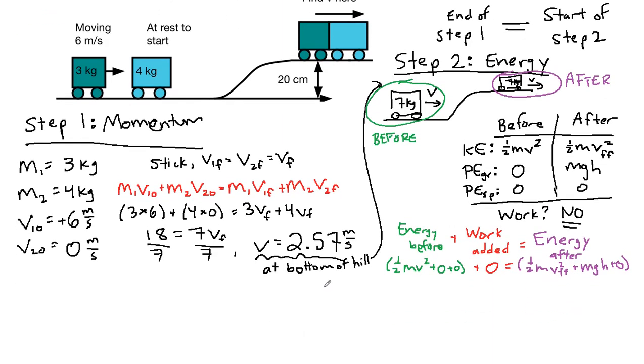Now we can plug in our numbers. So 1 half, the total mass is 7, the v that we're using here is the one at the bottom of the hill, so that's 2.57, that velocity will be squared. That's it for the left because everything else is 0.